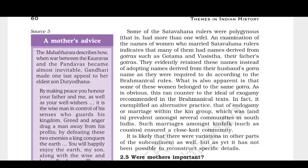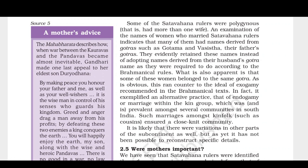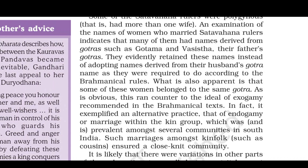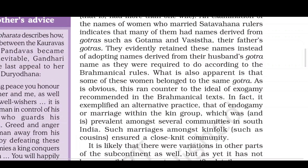Some of the Satavahana rulers were polygynous — polygyny meaning having more than one wife. An examination of the names of women who married Satavahana rulers indicates that many of them had names derived from gotras such as Gotama and Washishtha. So it is believed that a king had many queens, and they were named after their father's gotra — those whose father's gotra was Gotama were called Gotami.